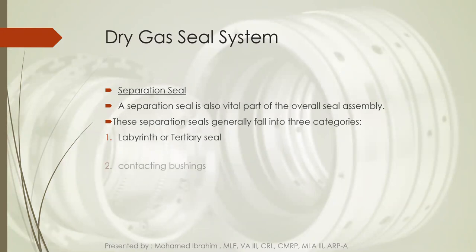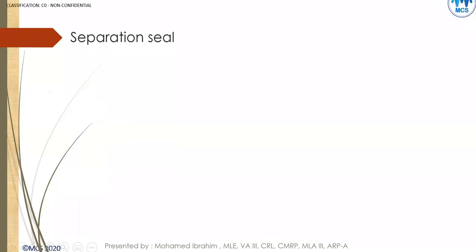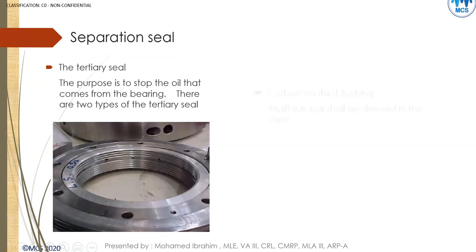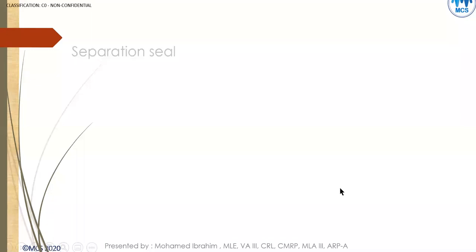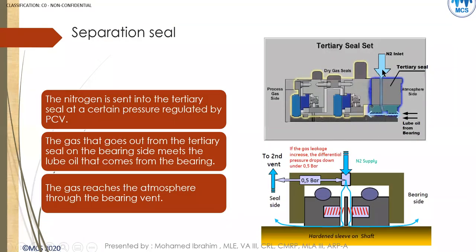There are three types of separation seals: the tertiary seal, which is a labyrinth seal, and also carbon bushing seals. You may find two carbon rings with a garter ring and spring in between. The tertiary seal and carbon ring configurations are both used depending on application.